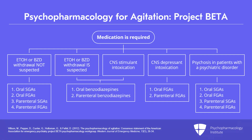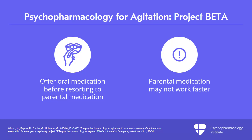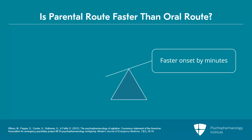What you're seeing now is an algorithm flowchart created as part of Project Beta — Best Practices in Evaluation and Treatment of Agitation — a medication consideration for the pharmacologic treatment of agitation. This is about 10 years old now, but it's surprisingly still contemporary and up-to-date. We really want to offer oral medications for people in all these conditions before resorting to parenteral meds. Some folks might say parenteral meds work faster, but not in every situation. PO lorazepam and IM lorazepam have just about the same time of onset. And even for antipsychotic medications where IM is faster than oral, sometimes we're only talking about minutes of difference.